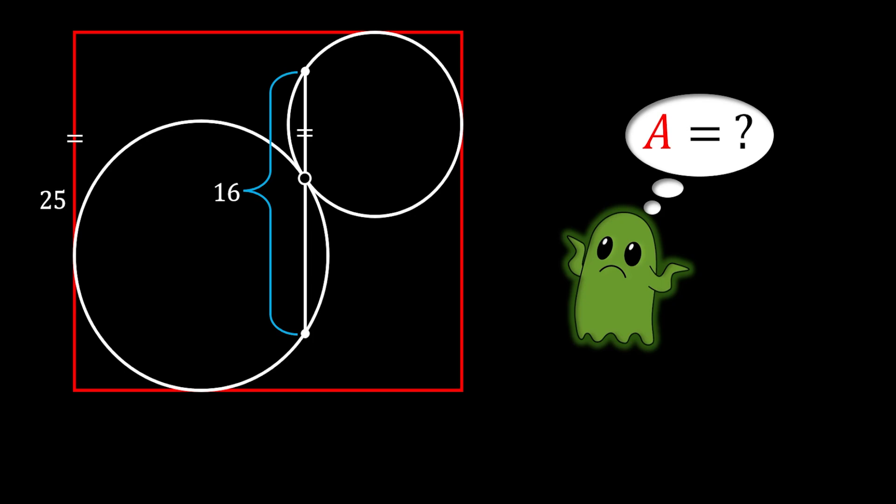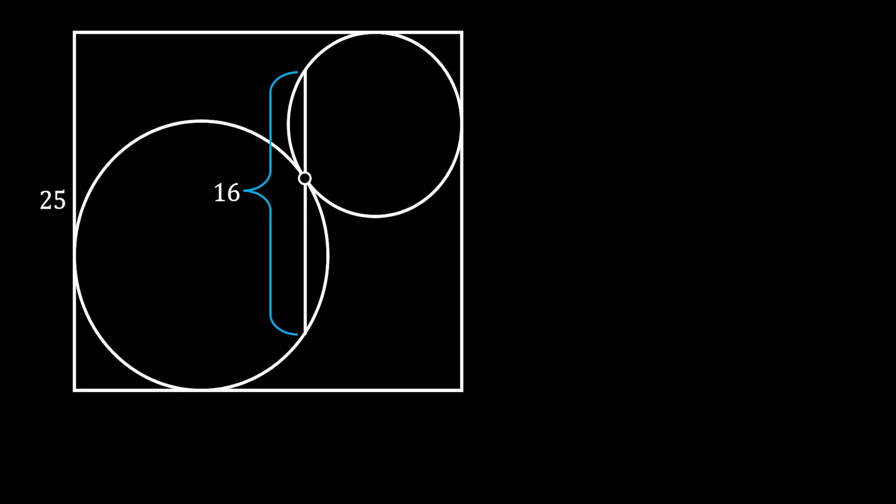Alright, so let's solve this one. We can start solving this problem by first labeling the point of tangency between two circles as O. Then, we can label the both ends of our vertical line as A and B.